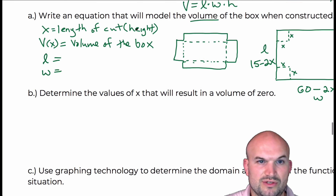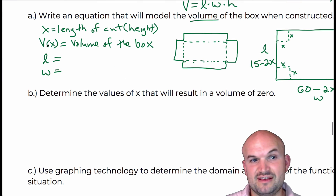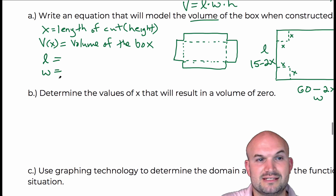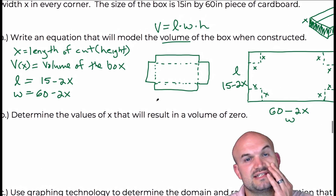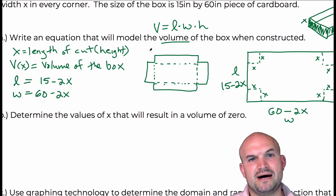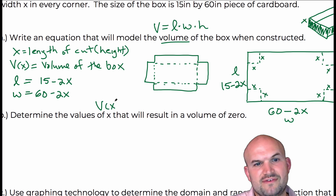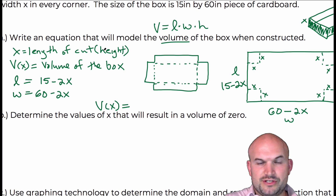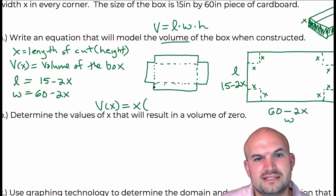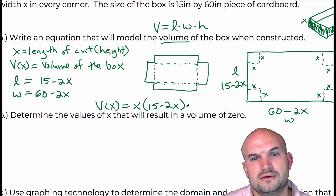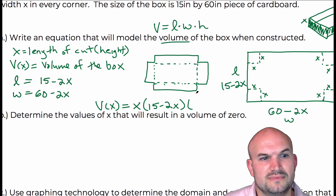So we have defined x as the height h, V(x) as the volume of the box, L = 15 − 2x as the length, and W = 60 − 2x as the width. Therefore, we can write the volume equation: V(x) = x · (15 − 2x) · (60 − 2x).